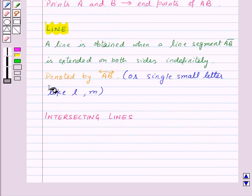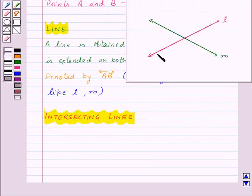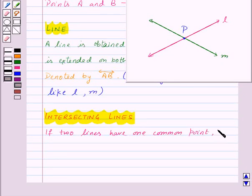Now let us see what are intersecting lines. Here we have two lines L and M and they meet at a point P. Such lines are called intersecting lines. So that means if two lines have one common point, they are called intersecting lines.